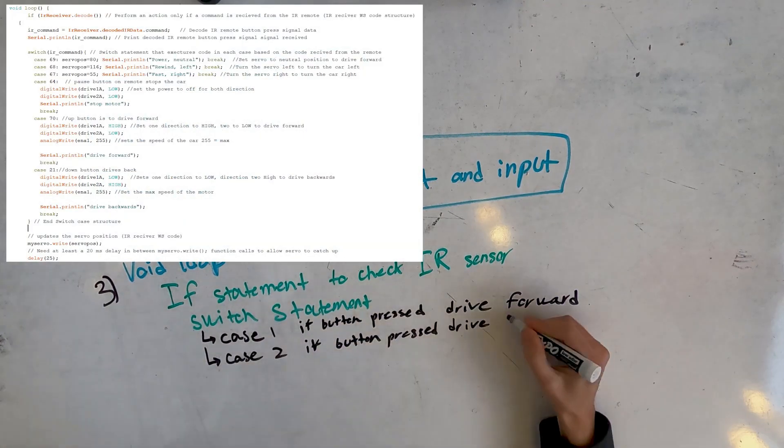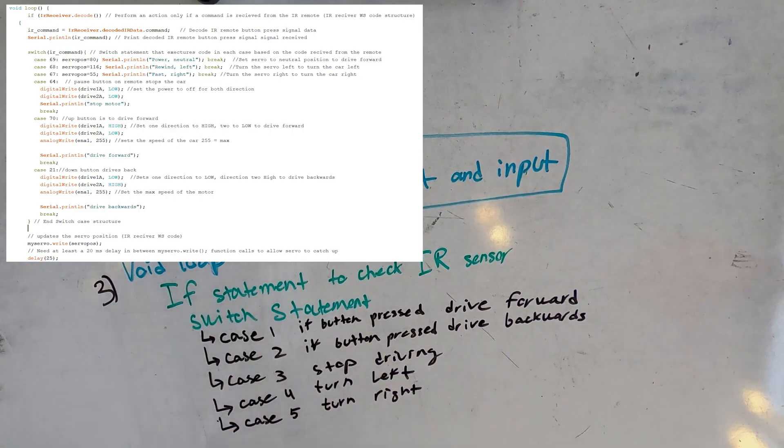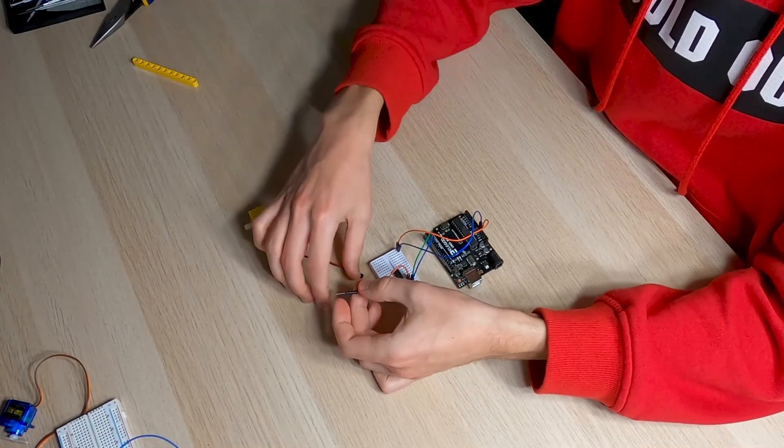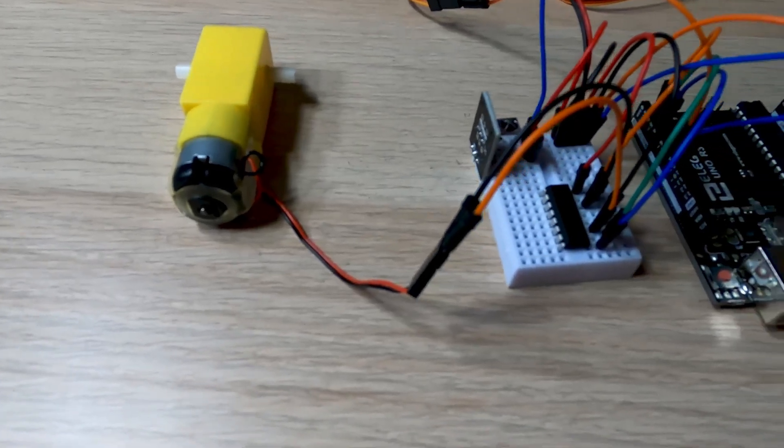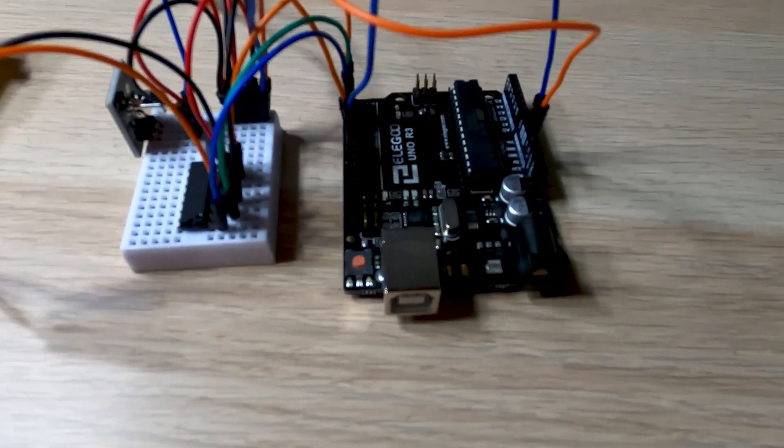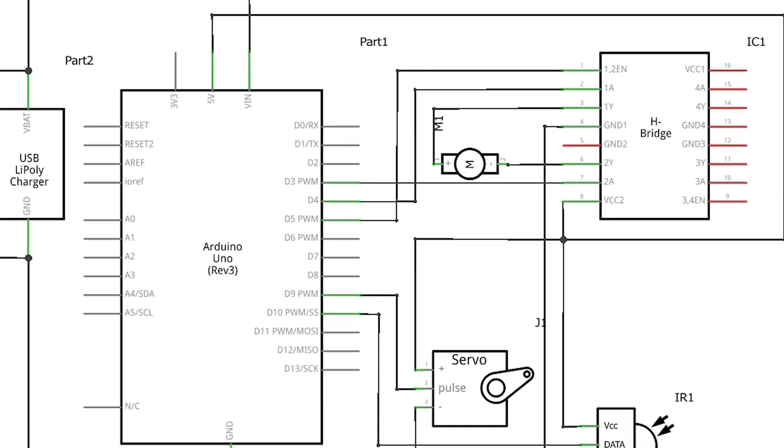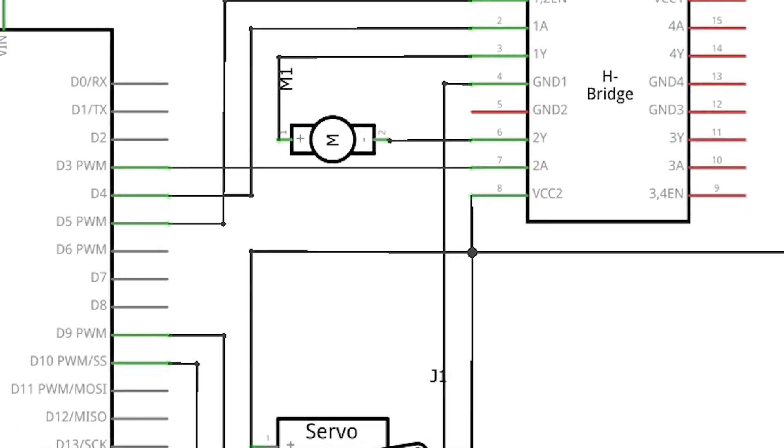Now, let's talk about how I brought it all together. After assembling the chassis and attaching the motors, I connected the Arduino board to the motor driver. This allows the Arduino to control the movement of the wheels. For the solar charging setup, I wired the solar panel to a charging controller, which then connects to the battery to make sure it's charged properly and safely.